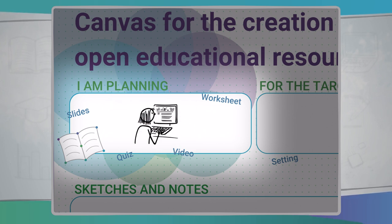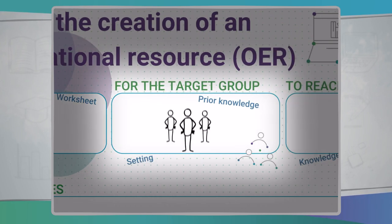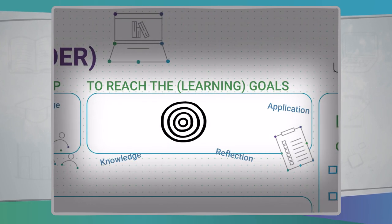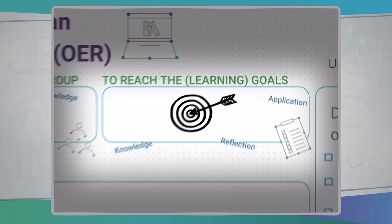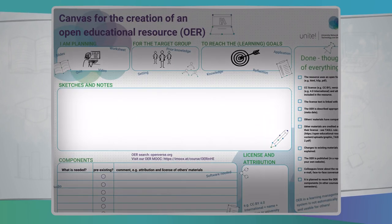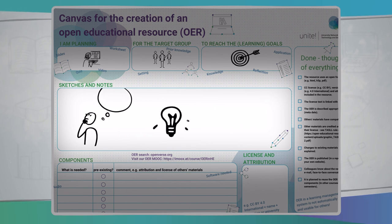The target group should then be defined, i.e., who do you want to reach? The next step is about the actual learning objectives, and you should describe what prior knowledge is required. The idea is then to roughly describe the learning resource, perhaps make sketches and take notes about what it should contain.